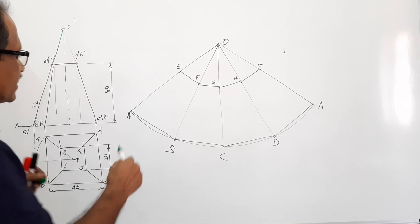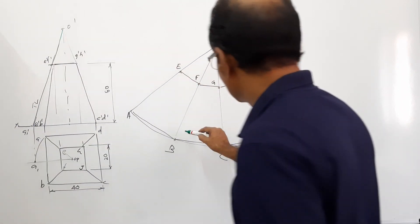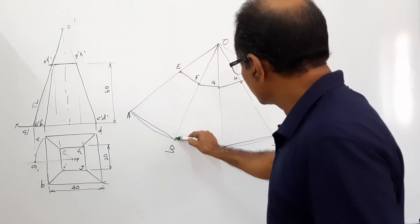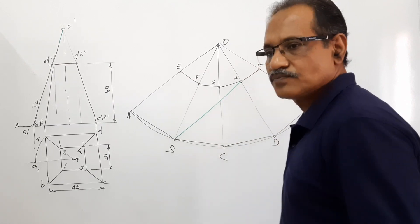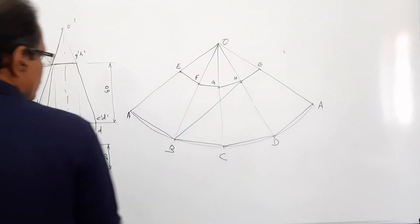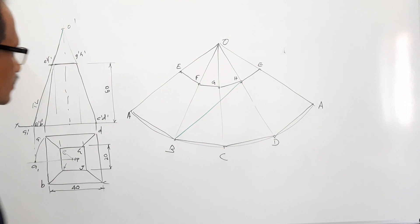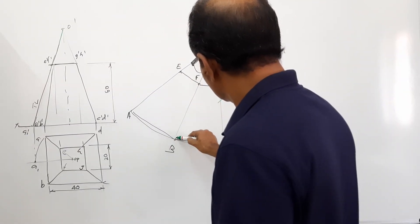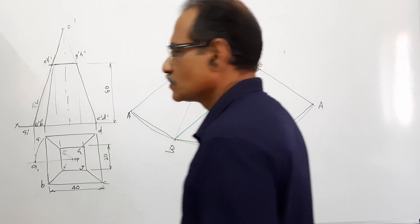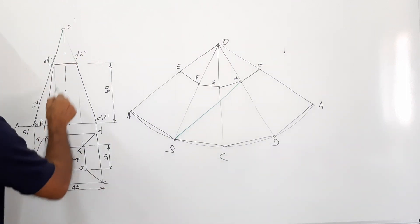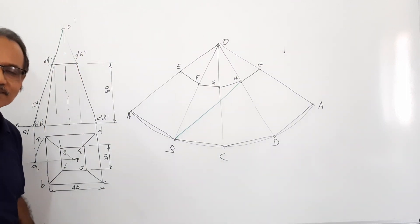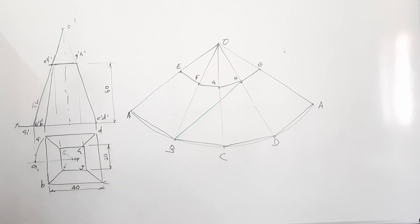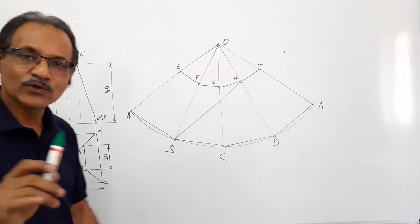Now connect B and H in the development by a straight line. Can we connect B dash and H dash here to show it in the elevation? No. Can we connect B and H in the plan to show it in the plan? No.